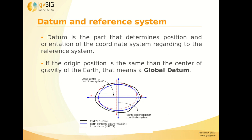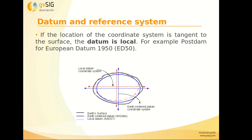The datum is the part that determines position and orientation of the coordinate system regarding the reference system. We can have a global datum or a local datum. For example, if the location is tangent to the surface in a local area — for example, for Europe — one of the datums that has been used in recent years was ED50, the European Datum 50.